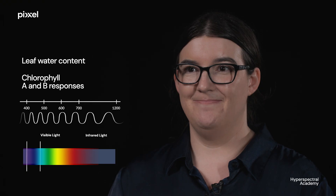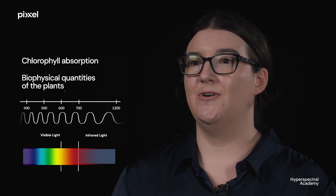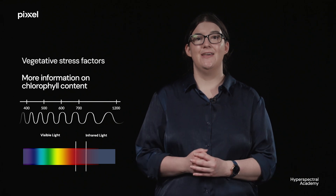Let's take a look at some of the spectral information you can see with hyperspectral imaging. In the blue and lower wavelengths, we are able to get information on leaf water content, as well as some areas for chlorophyll A and B responses. In green, we get information on leaf nitrogen, pigment, and total chlorophyll content. In red, we can get more information on chlorophyll absorption and the biophysical quantities of the plants themselves. Red edge is very important for vegetative stress — we're able to get a lot of stress factors in this area, as well as more information on chlorophyll content. As we start going into the near-infrared (NIR), we're getting more biophysical quantities because the reflectance here responds more to the volumetrics of the plants themselves.